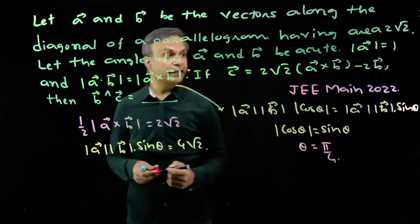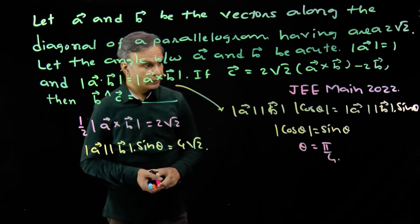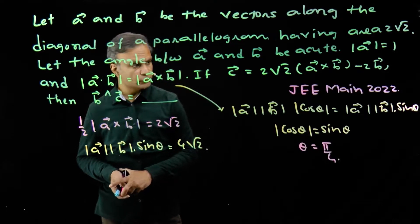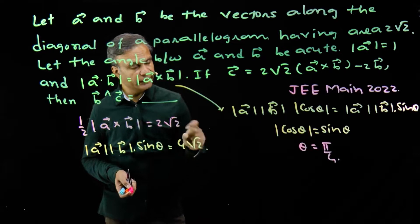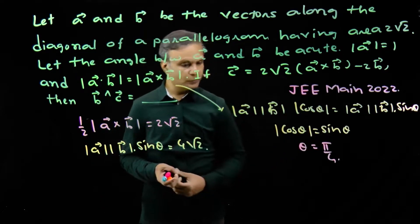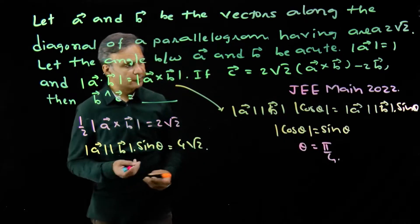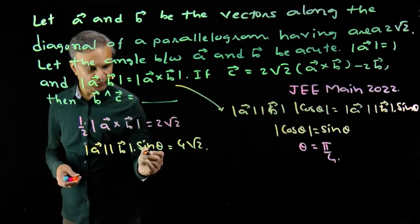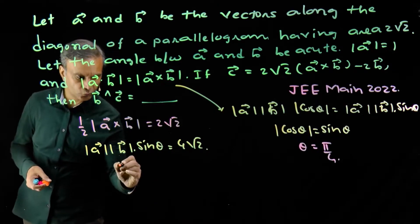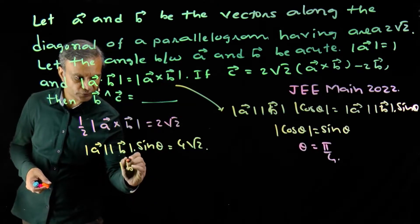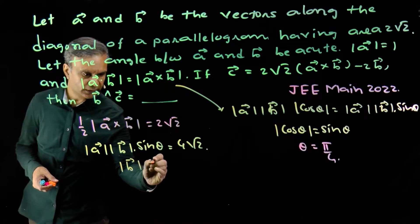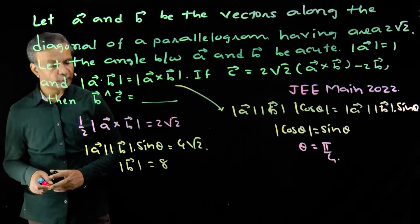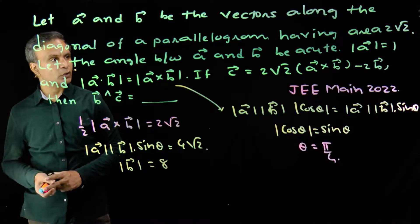Because the angle between vectors a and b is acute, we take θ = π/4 rather than 3π/4. With sinθ = 1/√2, substituting back gives modulus of b equals 8. We have now determined the value of modulus of b.